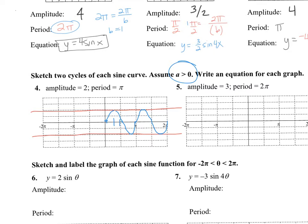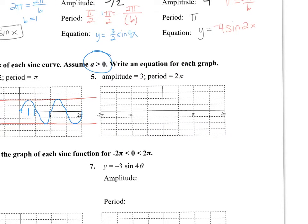Over here, my amplitude is 3, so I'm going to go up 3 and down 3. The period is 2π, so I'm going to break the period into 4 — and it's actually already broken up into 4. So it starts at 0, goes up to max, 0, min, 0. It'll be a little neater than I'm drawing right here.